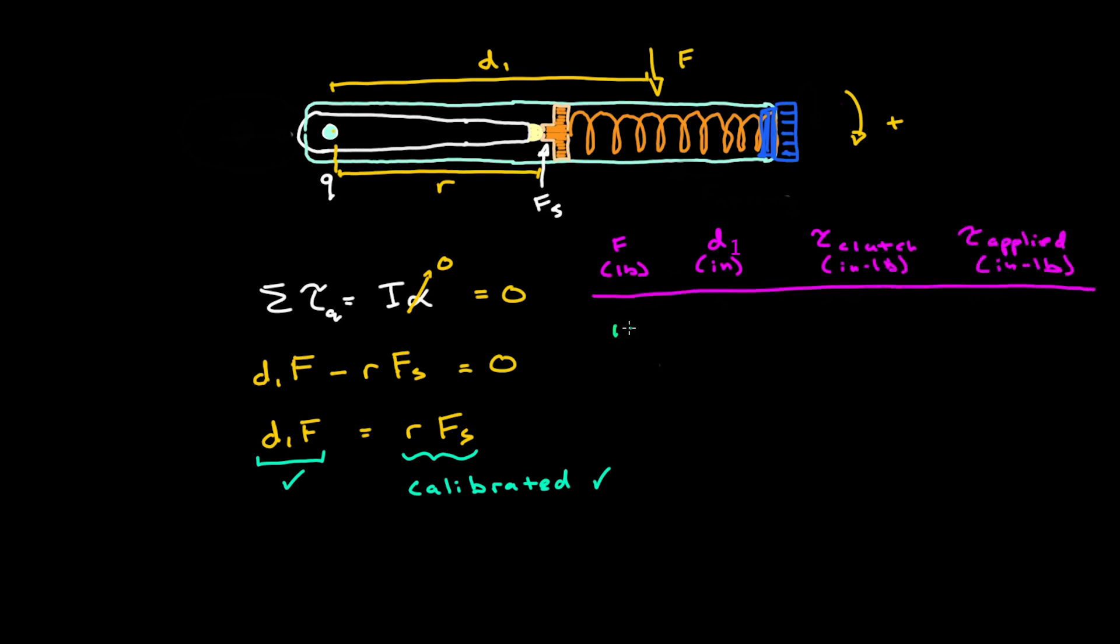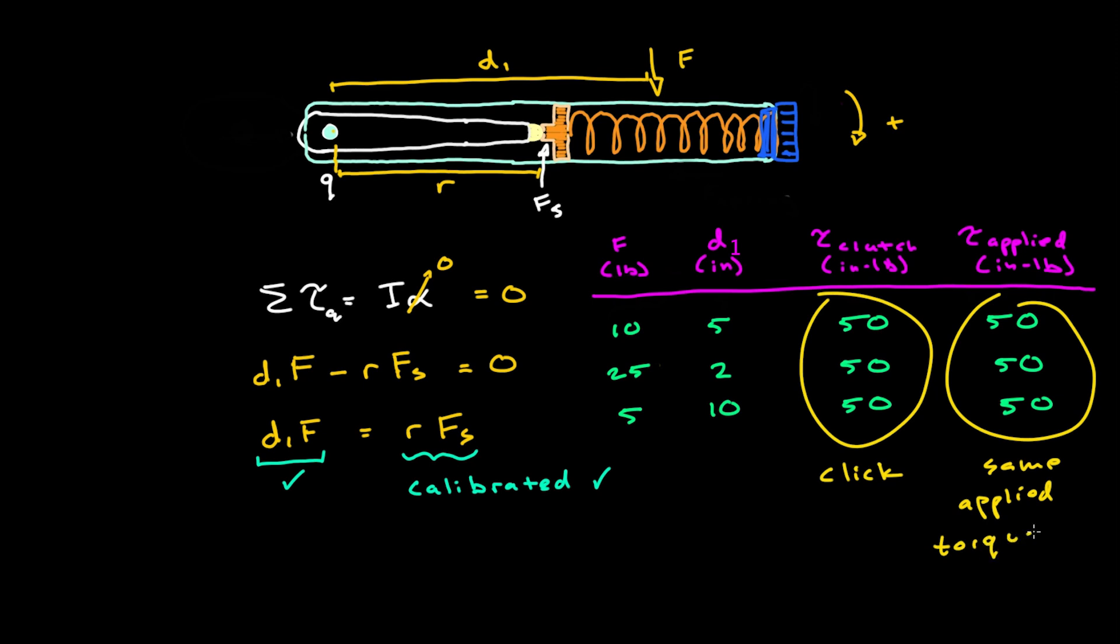For instance, a force of 10 pounds applied at a distance d1 of 5 inches would yield a torque of 50 inch pounds experienced by the clutch as well as an applied torque of 50 inch pounds at the socket since in this hypothetical scenario, they're at the same point. Similarly, a larger force of 25 pounds applied at a shorter distance of 2 inches, in other words, choking up on the handle, would yield the same effective torque of 50 inch pounds, again, at both the clutch and the socket. And of course, it works in the other direction as well. If we apply a smaller force of only 5 pounds at a longer distance of 10 inches, we still see an applied torque of 50 inch pounds, and in every case here, the wrench will click and the applied torque at the bolt is the same 50 inch pounds. This is characteristic of non-length-dependent torque wrenches since it doesn't matter where you hold the torque wrench handle.